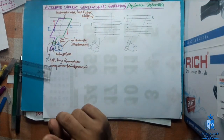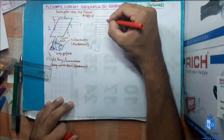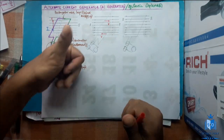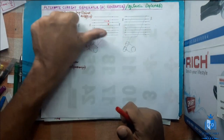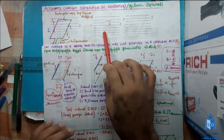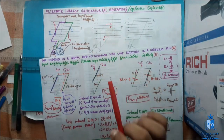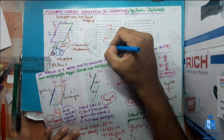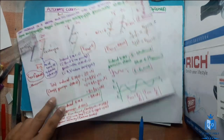Now what is the problem here? The problem is the velocity will be in this direction, and the magnetic field and the direction of velocity are parallel. So there will be no EMF induced — we have already done that before. So there will be no induced current or no induced EMF. So the reading will be zero here — it is also going to be a fluctuation like this.